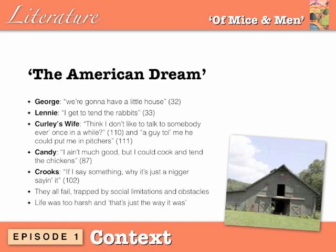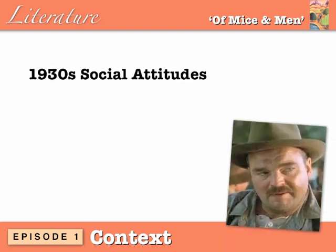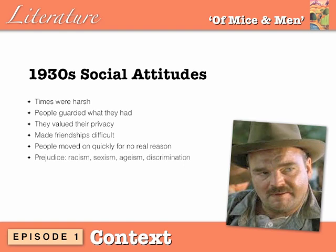It's not a satisfactory explanation for the reader, but it's the one we're forced to accept. Turning to 1930s social attitudes: times were very harsh and people guarded what they had, valued their privacy, and feared getting in trouble and getting sacked. This made friendships very difficult. Prejudice was everywhere in its various forms — racism (Crooks), sexism (Curley's wife), ageism (Candy), and discrimination (Lennie). Carlson is the stereotypical ranch worker, and anyone who differs from him seems to suffer prejudice in the novel. All of this made achieving dreams very difficult and, for the characters in the novel, impossible.